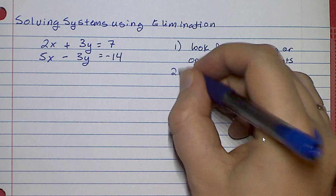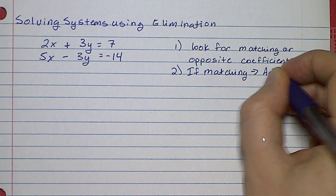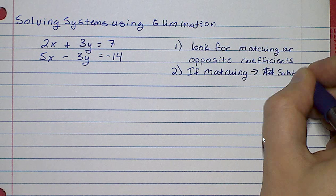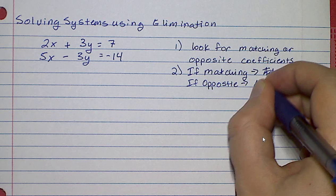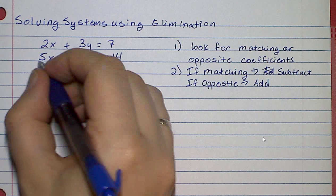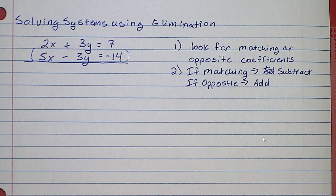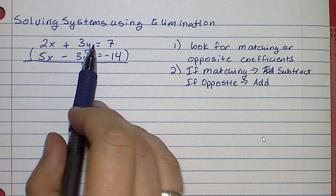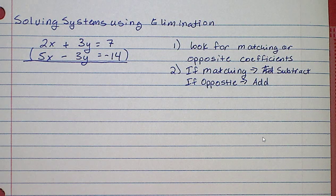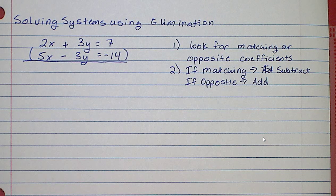Step number 2: if the coefficients are matching, you're going to subtract; if they're opposite, you're going to add. What I mean by add is you're going to take these two equations and turn them into one big addition or subtraction problem. I draw a line underneath the last equation, put the last equation in parentheses — this part's important. If they're opposite, I'm going to add everything in the bottom to everything on top. So in this case, because the 3y and the minus 3y were opposite, I'm going to add these two together.